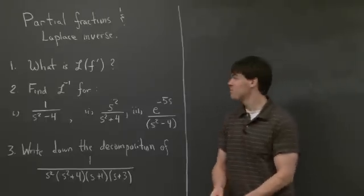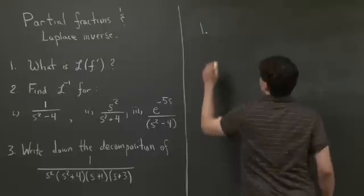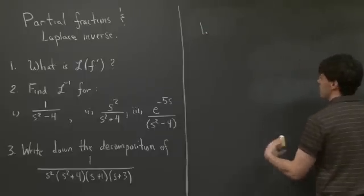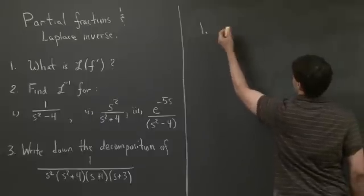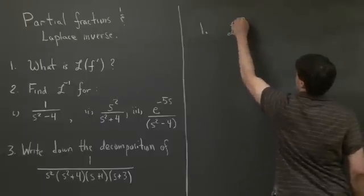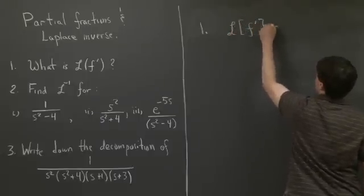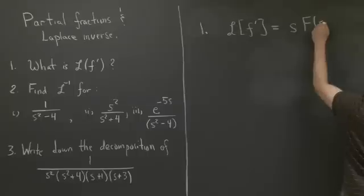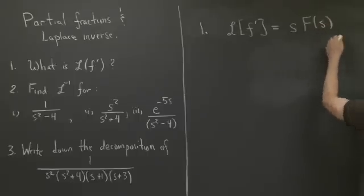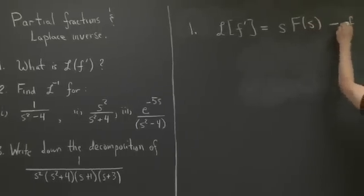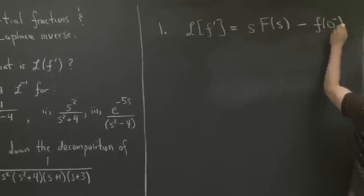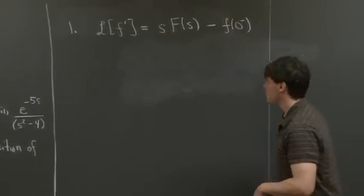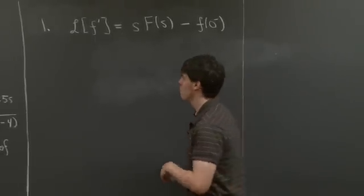Welcome back. So for part one, we're asked to recall the Laplace transform of f prime in terms of the Laplace transform of f. The Laplace transform of f prime we can write as s times the Laplace transform of f — which I'll denote capital F — minus f evaluated at the lower bound of the Laplace transform integral, which in this case is 0 minus. So this is just the warm-up problem.